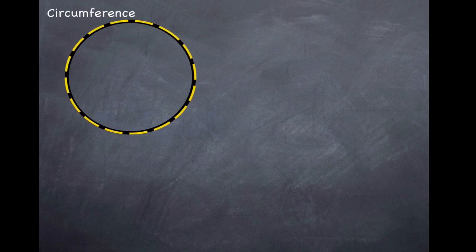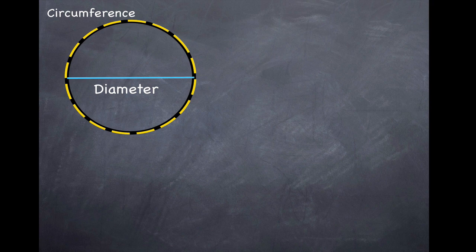So let's begin. This is a circle and we want to identify the circumference. There it is in yellow. That's what we mean by the perimeter of a circle. And the diameter from edge to edge, there it is.